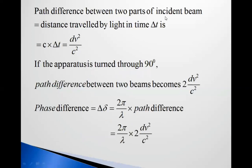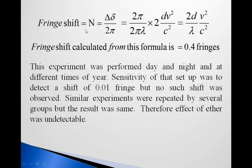The path difference between the two parts of the incident beam equals the distance traveled by light in time ΔT, which is c·ΔT = DV²/C². If the apparatus is turned 90 degrees, the path difference between the two beams becomes twice DV²/C². The fringe shift is ΔN = (2π/λ) × path difference = (2D/λ)(2V²/C²), which is the fringe shift after rotation through 90 degrees.